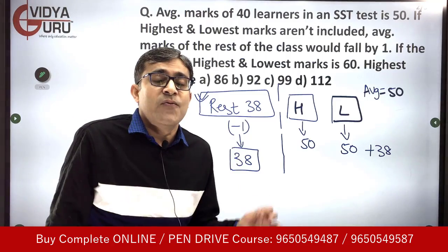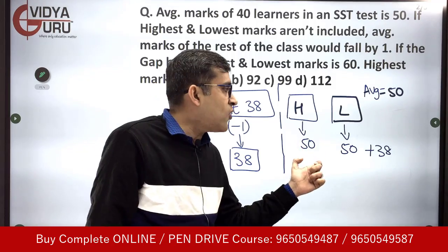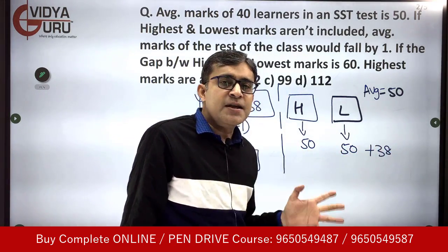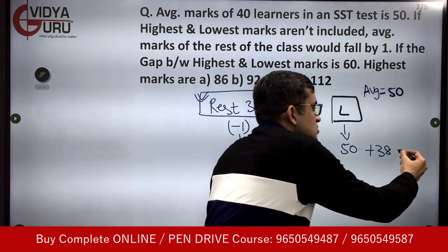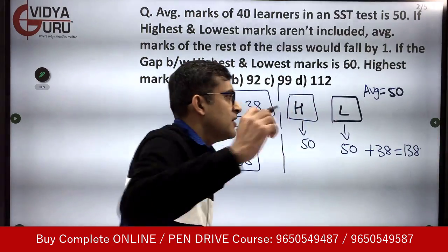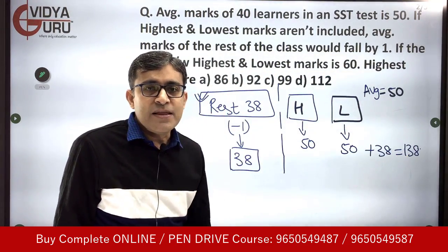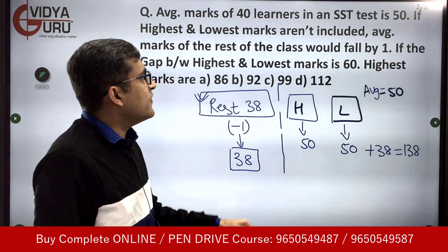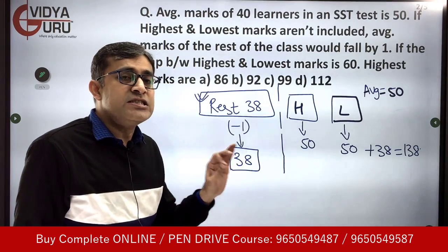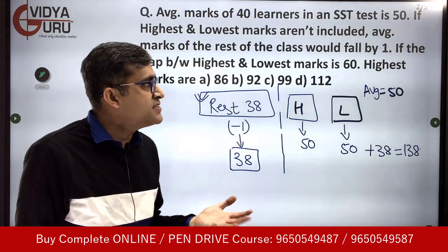So the sum total of the highest and the lowest marks is: 50 + 50 + 38 = 138. Further, we have been given that the difference between the highest marks and the lowest marks is 60.